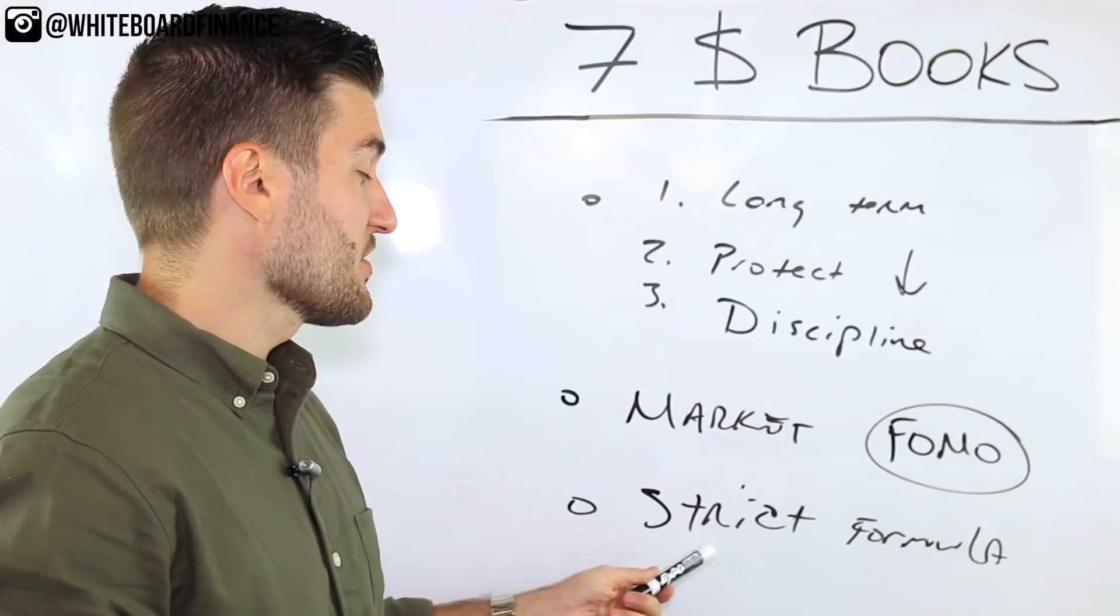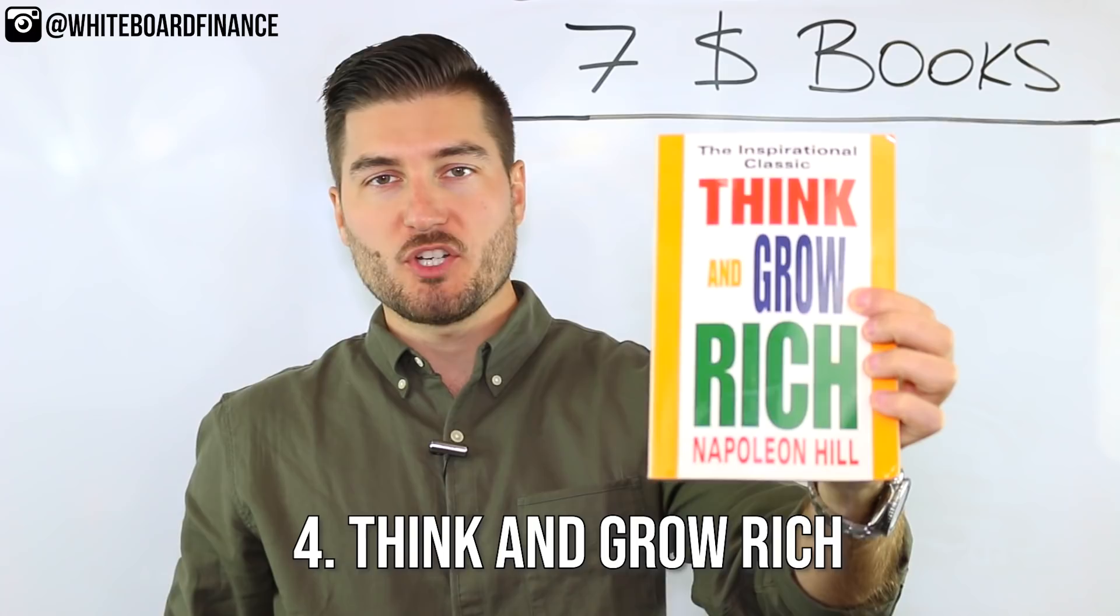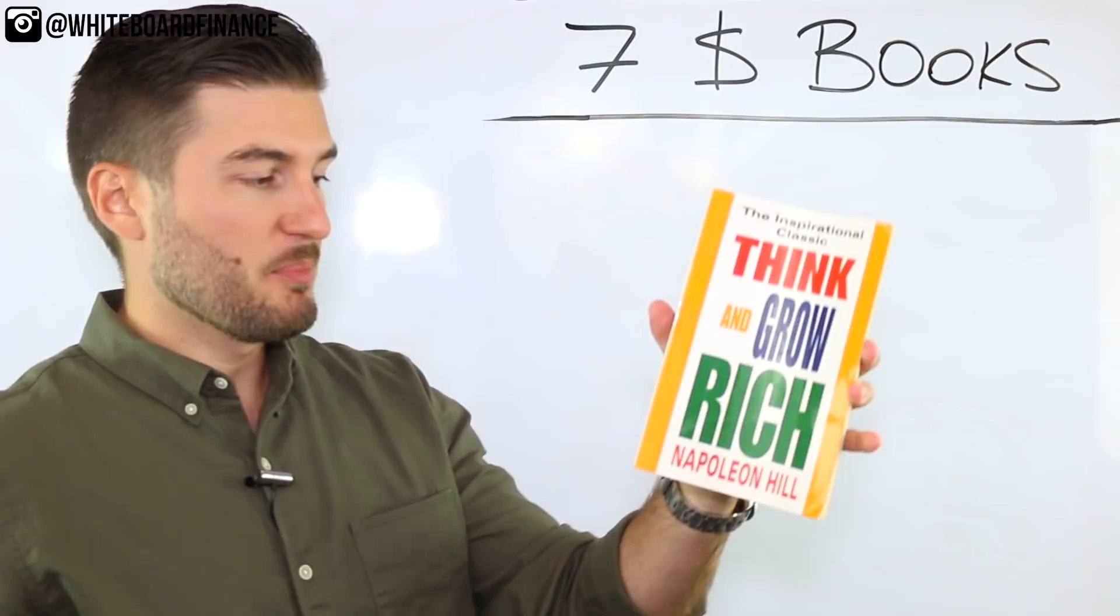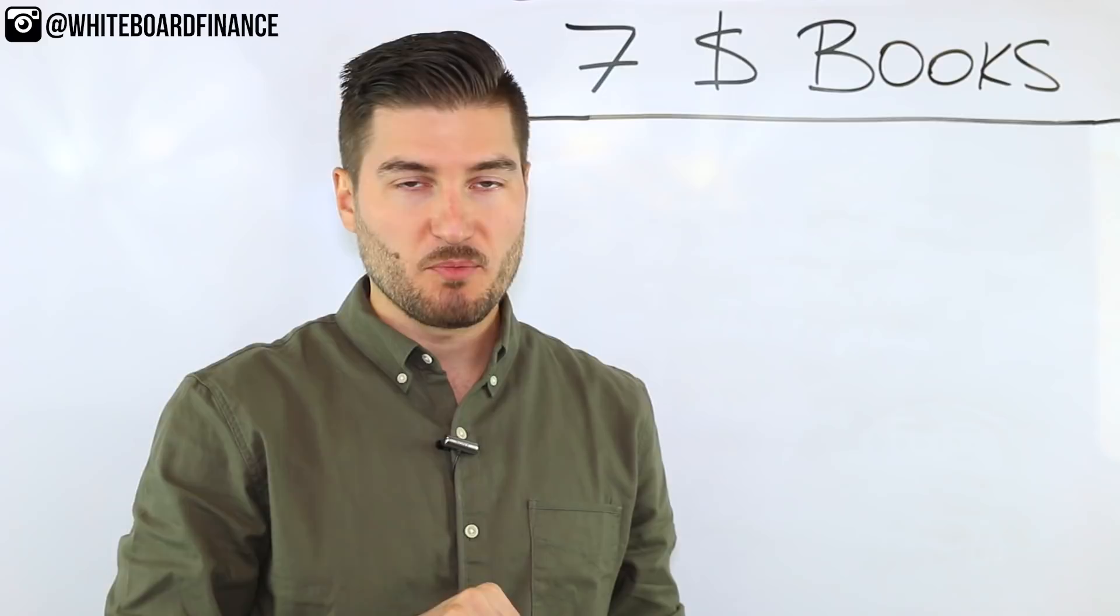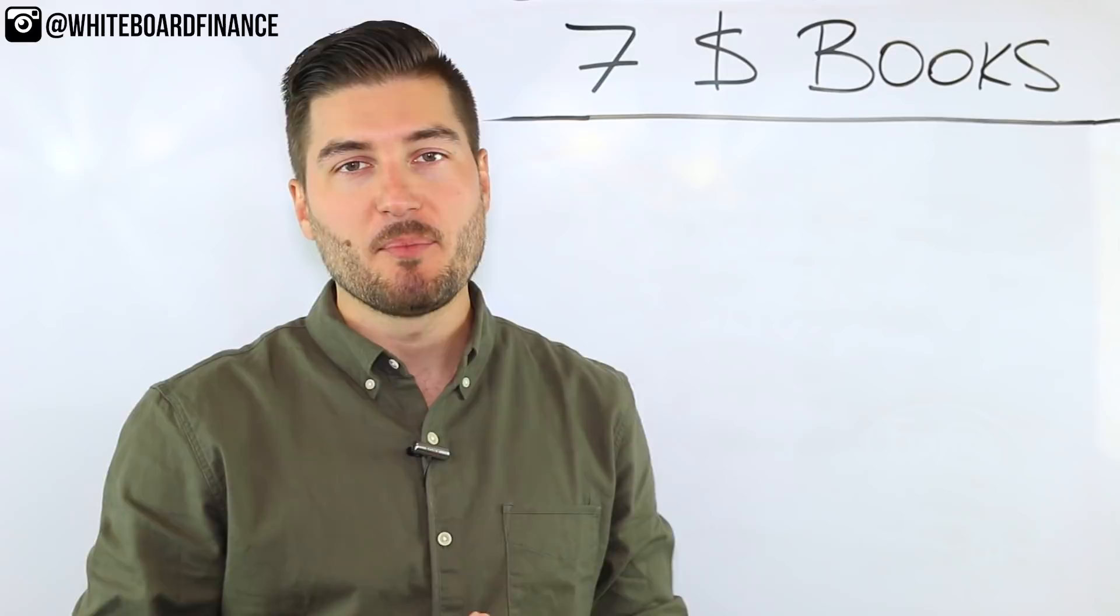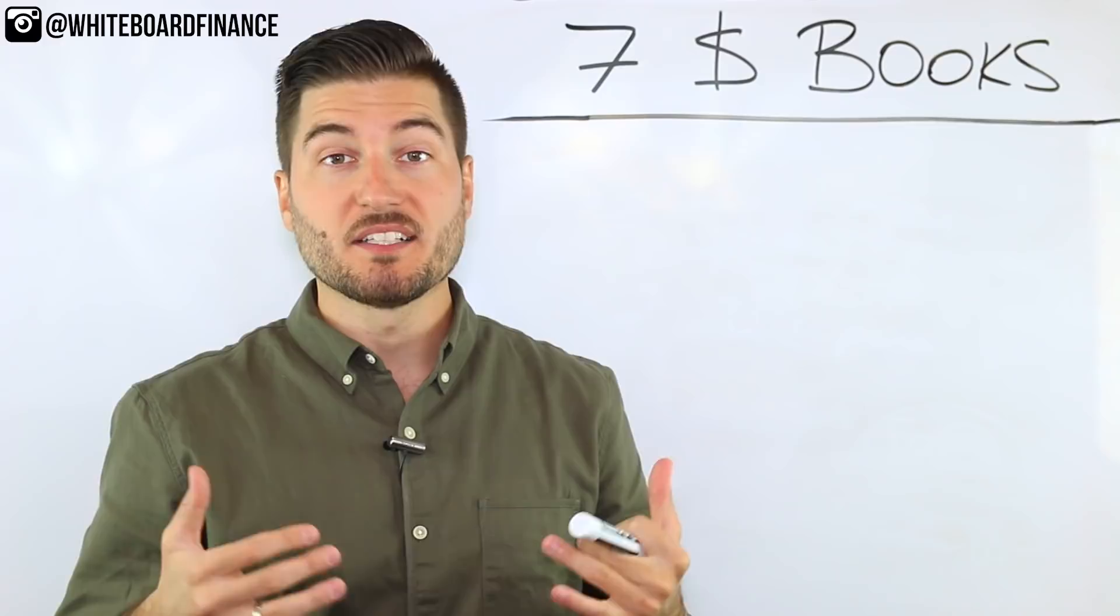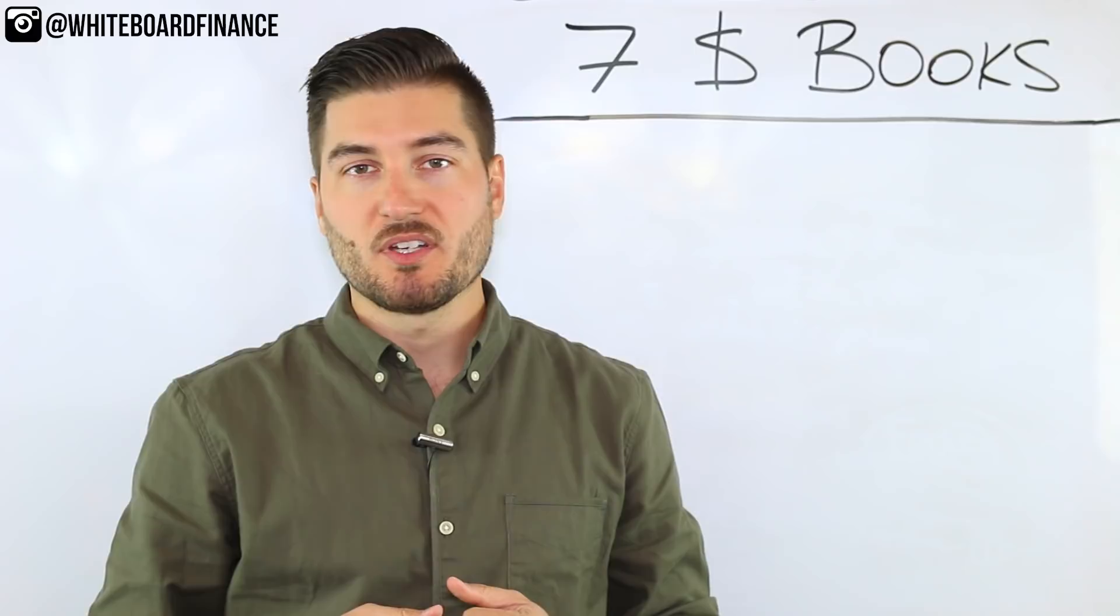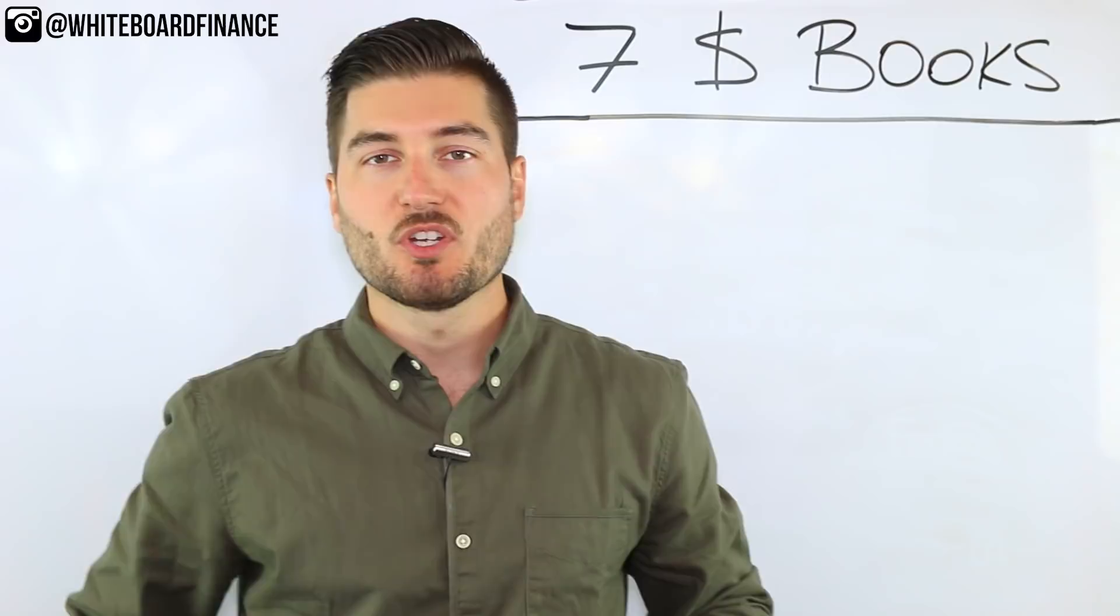So next on the list at number four is not necessarily a finance book, but it kind of falls into this category. This is Think and Grow Rich by Napoleon Hill. This was also written a long time ago and has sold millions of copies worldwide. Think and Grow Rich is essentially a curation of 13 common habits shared by wealthy and successful people. So this person, Napoleon Hill, studied 500 individuals over the course of 20 years and distilled their habits into those 13 things. I'm not going to tell you necessarily what those are because I want you to read the book. But this book is essentially for people that are looking to get into the right mindset of being successful.